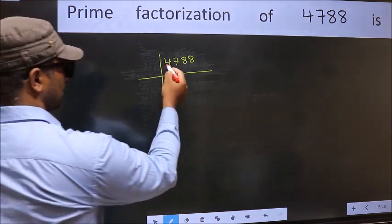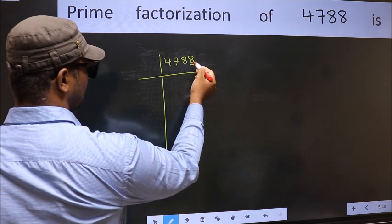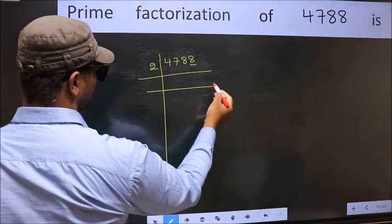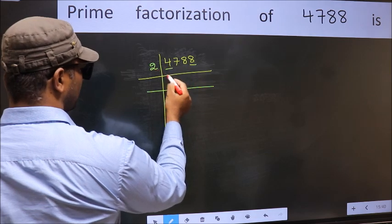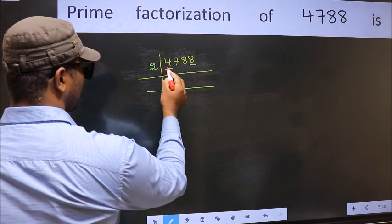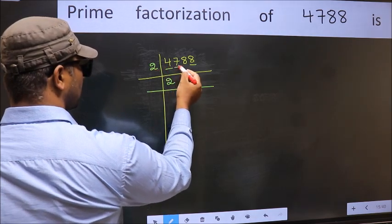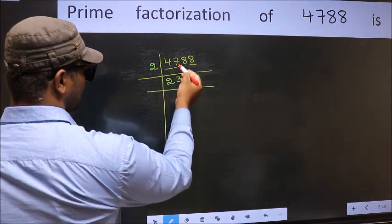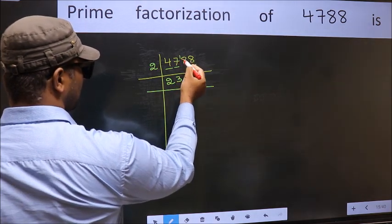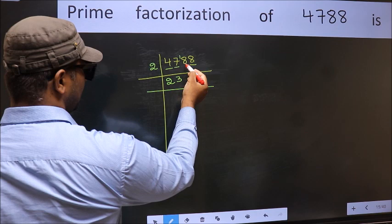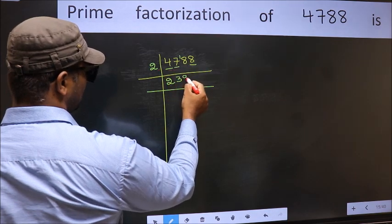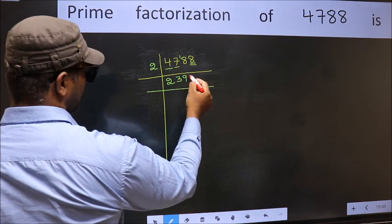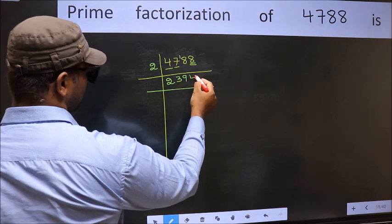In this number, the last digit 8 is even, so take 2. First number 4 — when do we get 4 in the 2 table? 2 twos are 4. The other number 7 — a number close to 7 in the 2 table is 6 (2 threes). 7 minus 6 is 1, carried forward: 18. When do we get 18 in the 2 table? 2 nines are 18. The other number 8 — when do we get 8 in the 2 table? 2 fours are 8.